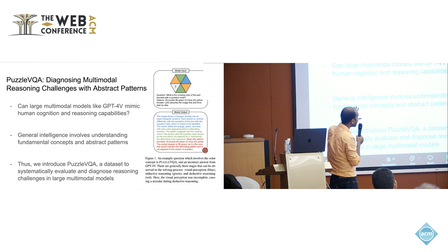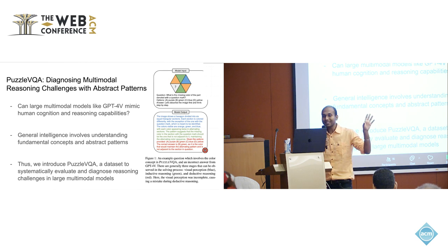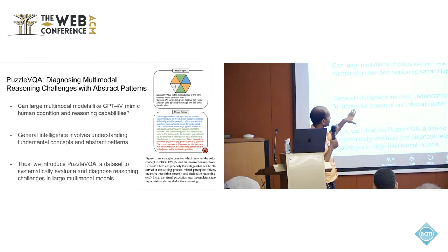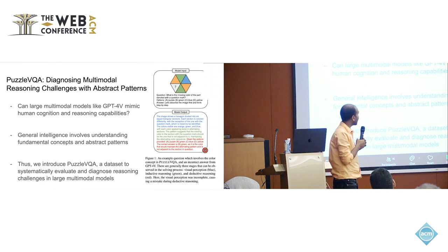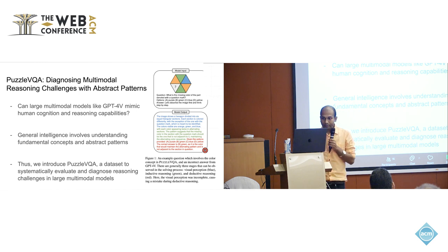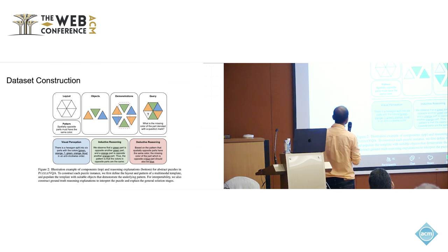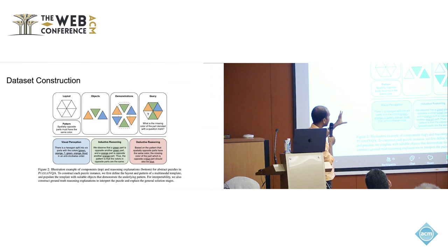We give these visual pattern questions to GPT-4 and try to understand whether GPT-4 can perfectly answer them, using chain-of-thought and other prompting techniques. This is PuzzleVQA. To construct the dataset, we had a layout with patterns and objects, then created demonstrations along with a query. There are three multimodal reasoning steps: visual perception — the model has to understand how many parts are in the image and their colors — then inductive reasoning to determine what pattern is happening, and finally deductive reasoning to reach the conclusion answer.